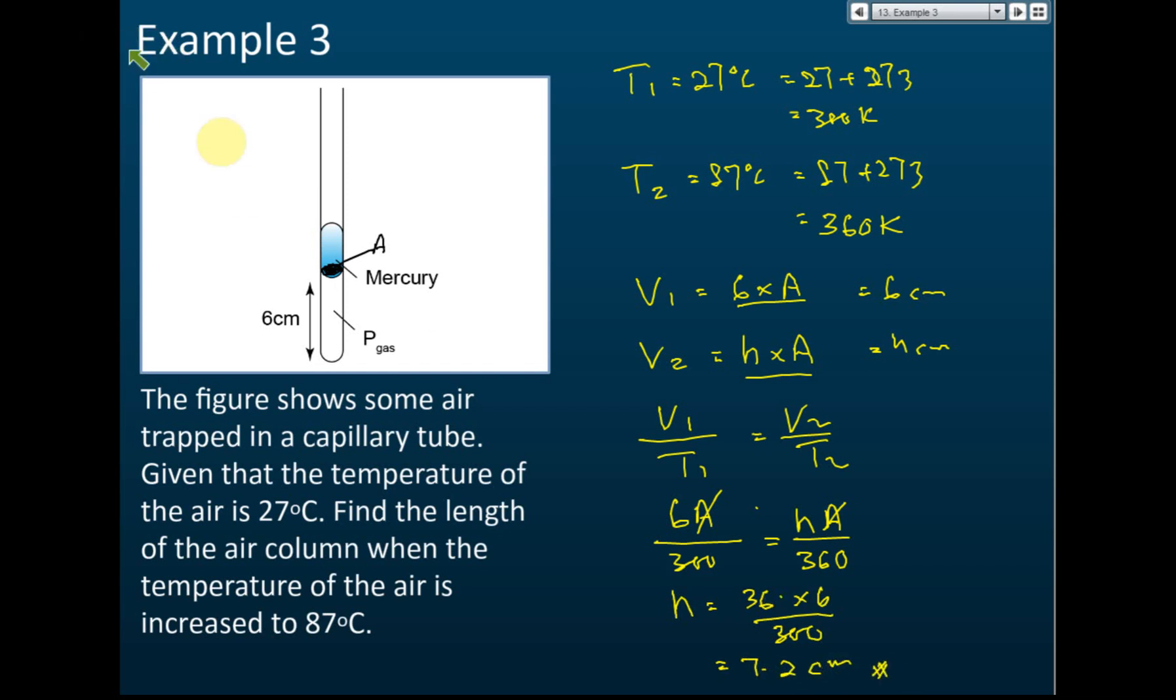So initially 6 cm - when the temperature increased to 87 degrees Celsius, then the length of the mercury column will be 7.2 cm.